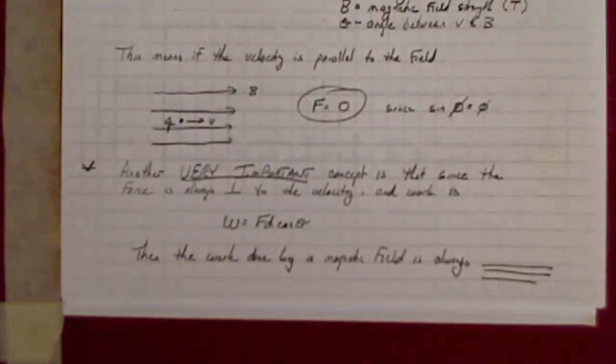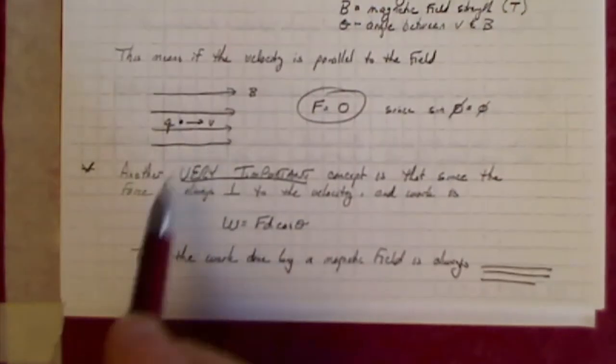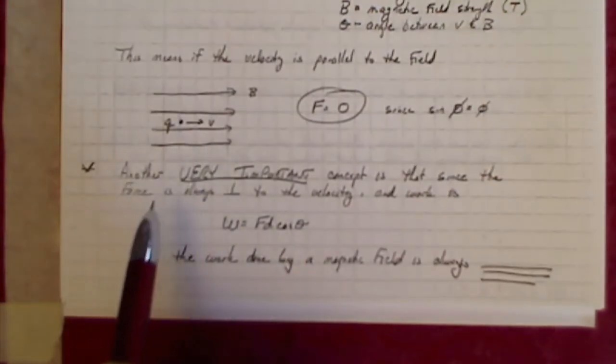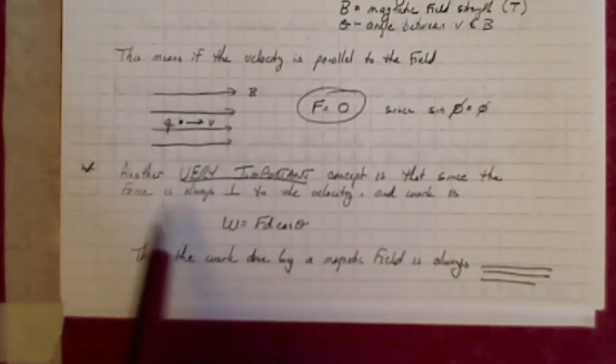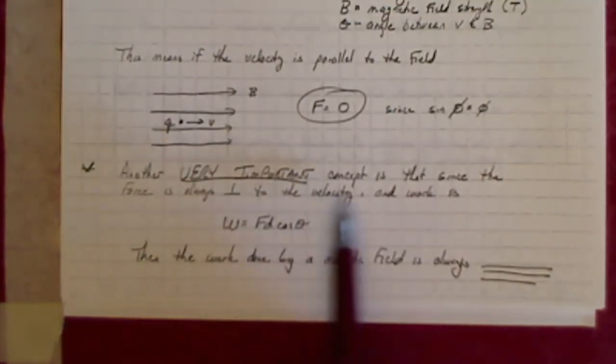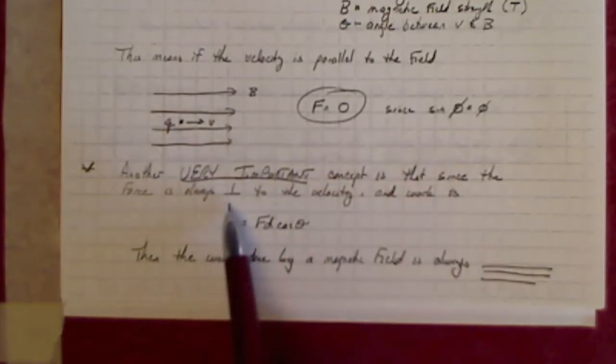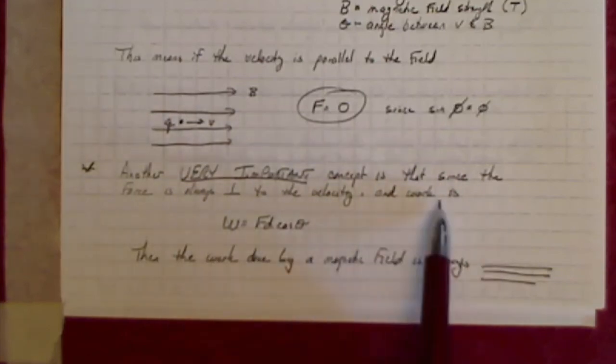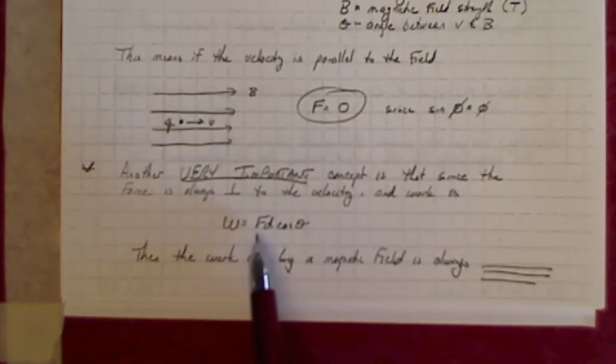Another concept to keep in mind: because the force is always perpendicular to the velocity when you have a particle moving through a magnetic field, and work is Fd cosine theta...